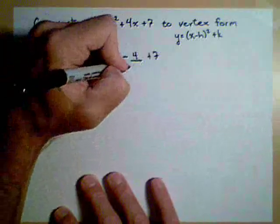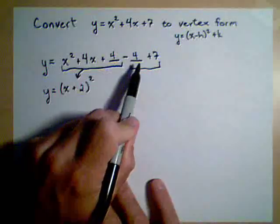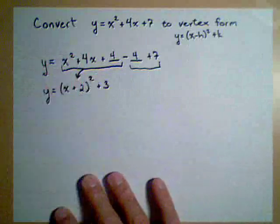Now we have to take care of this part here as well. We have a negative 4 plus 7. So plus 3. And we are now in vertex form.